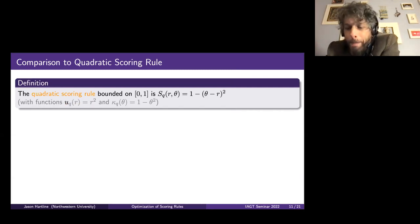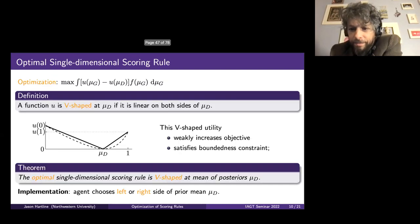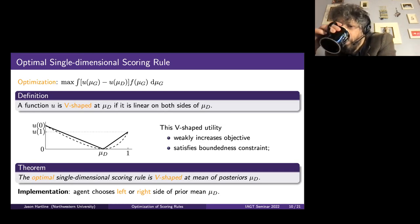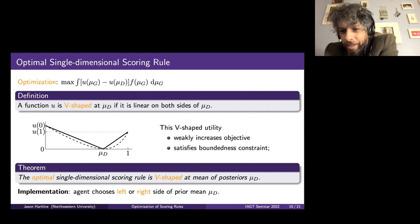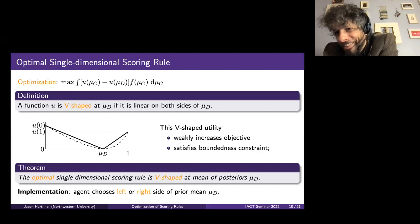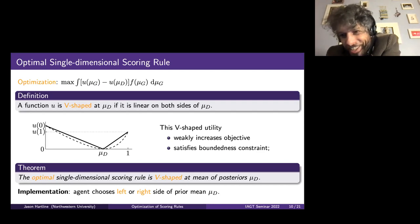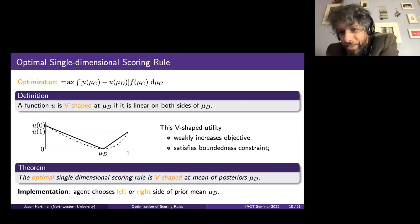Let's look at quadratic scoring rules. The quadratic scoring rule gives the agent one dollar and subtracts how far they are from the true state squared. Mapping into the canonical framework, this chooses utility function U(r) = r² and kappa(theta) = 1 - theta², which is where the normalization comes from to make things [0,1] bounded. For an example: looking at the difference of scores under D versus under G, the constant one cancels out. So the normalization business is a little bit of a red herring — what matters is the difference between the upper and lower bound, that one unit of variation.